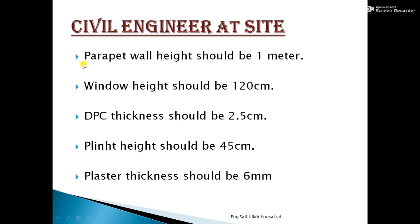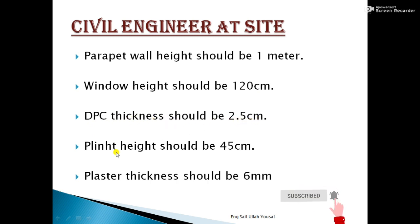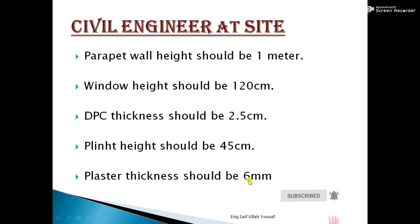The parapet wall height should be one meter. Window height should be 120 centimeters. DPC (damp proof course) thickness should be 2.5 centimeters. Plinth height should be 45 centimeters, and the thickness of plaster should be 6 millimeters.